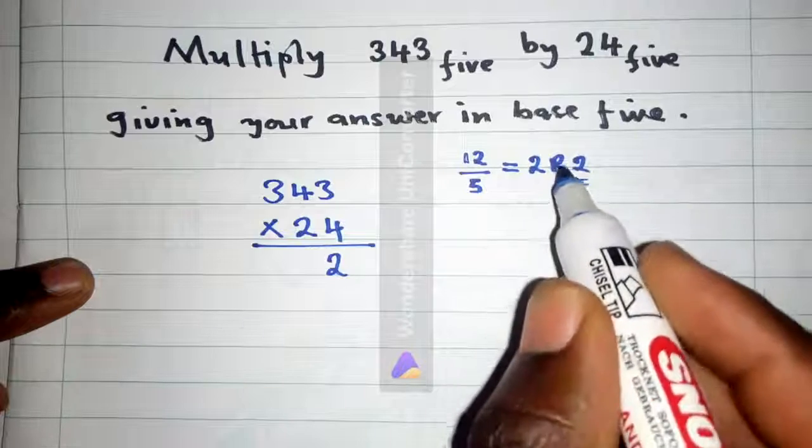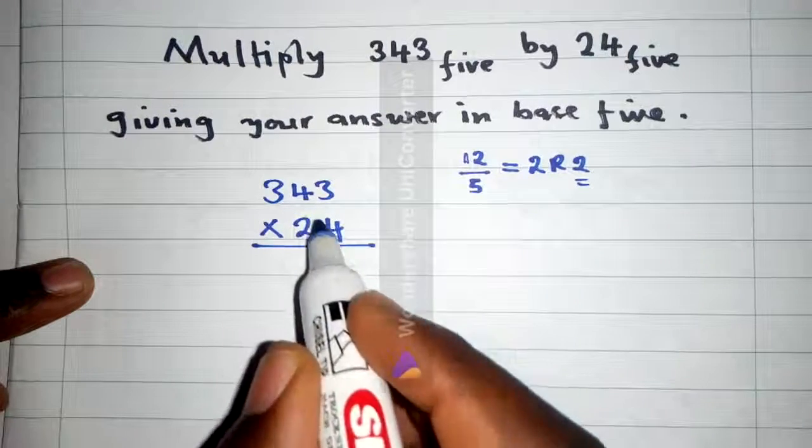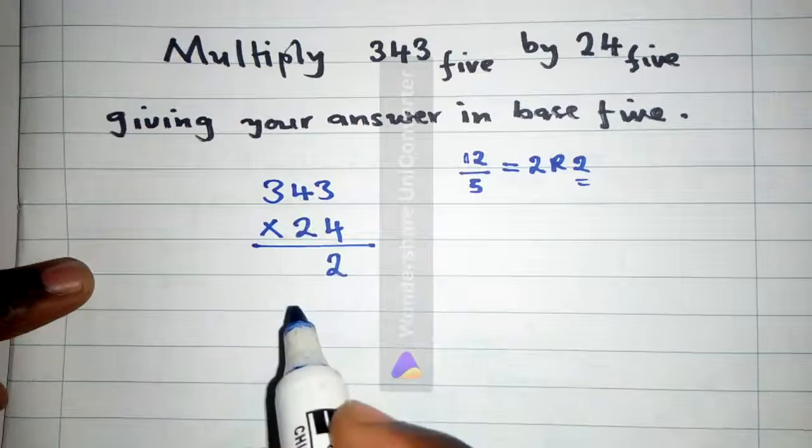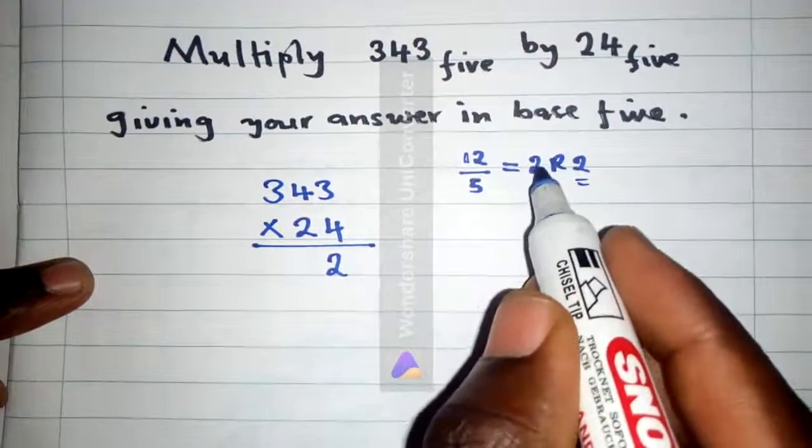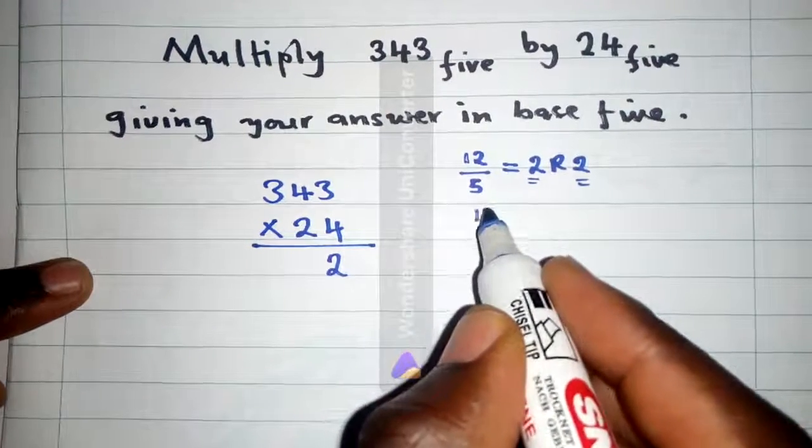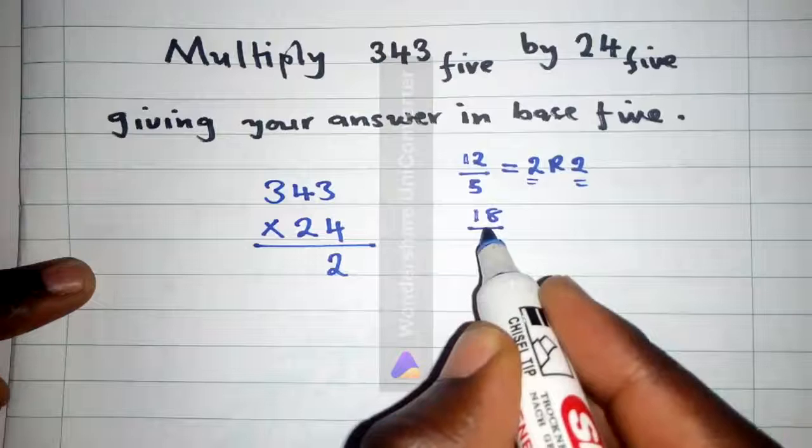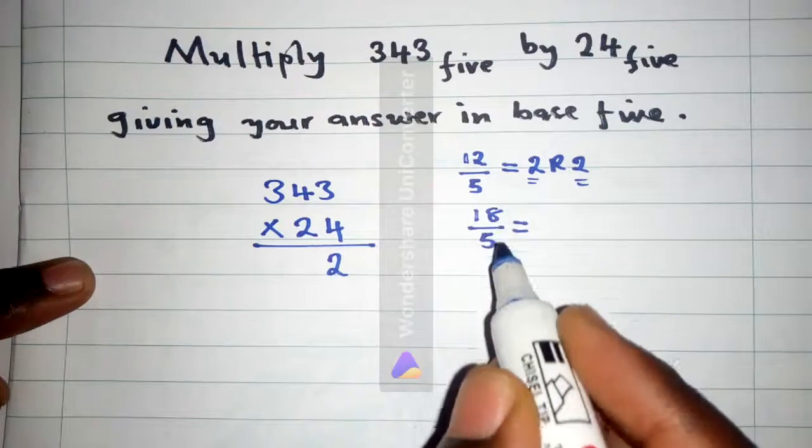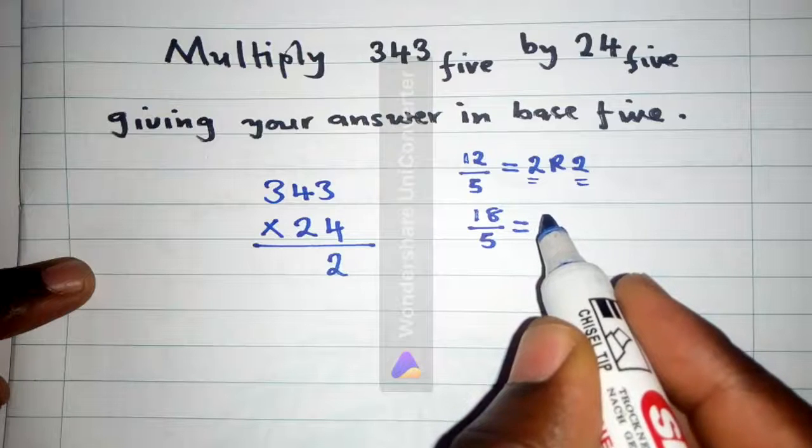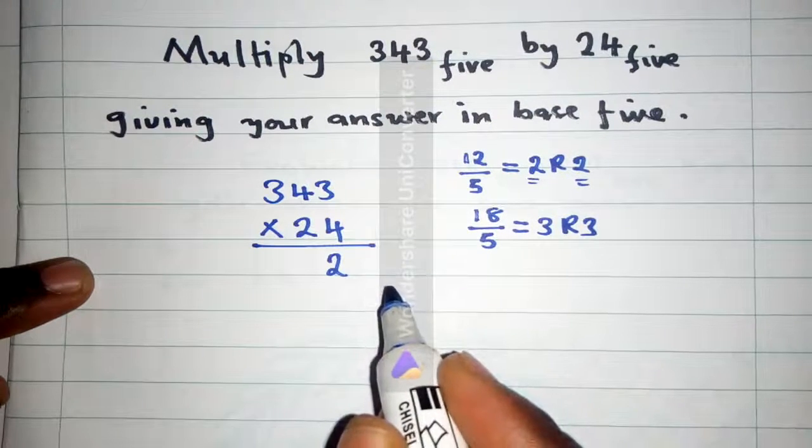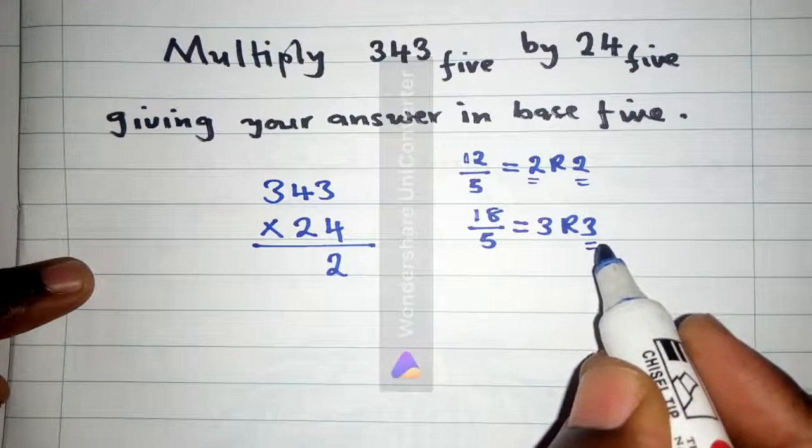So it will be 4 times 4, which is 16. 16 plus these 2 here is 18, so we cannot write 18 here. We write 18 here and divide by 5. How many times can 5 go into 18? It's 3 remainder 3.